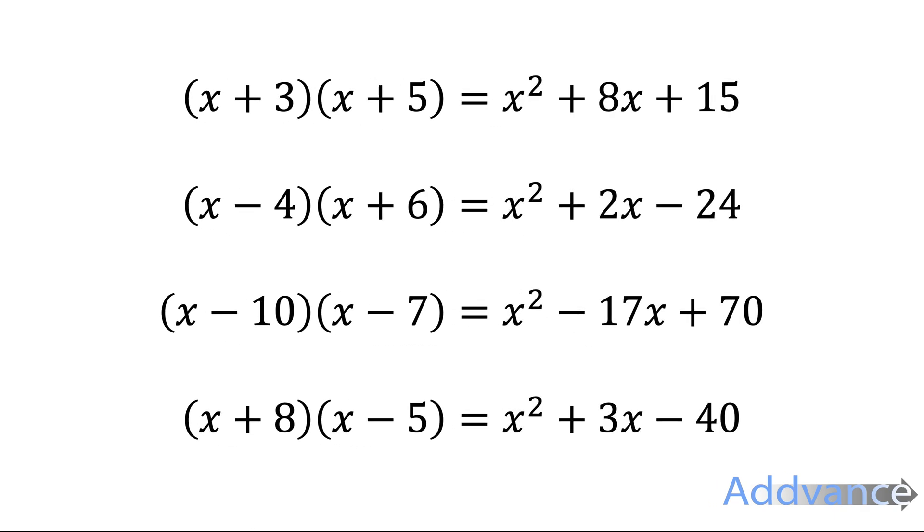Did you get it right? So you should have got x squared plus 8x plus 15, x squared plus 2x minus 24, x squared minus 17x plus 70, and x squared plus 3x minus 40.